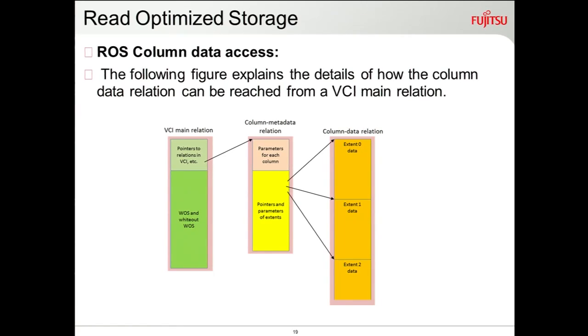Whenever you have a TID, you refer to the TID-to-CRID map, and from there directly go to the extent to get the ROS data you want.